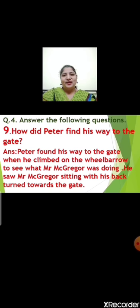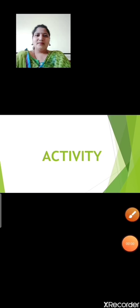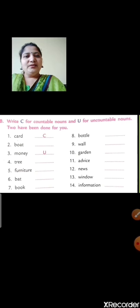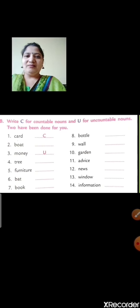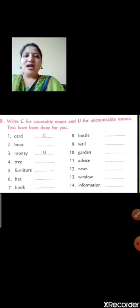Children, I hope you have understood. I want all of you to write all the questions and answers in your notebook. Now children, let us do an activity related to grammar. You have to write C for countable nouns and U for uncountable nouns. We have already learnt what are countable nouns and what are uncountable nouns. The things which we can count are known as countable nouns and the things which we cannot count are known as uncountable nouns.